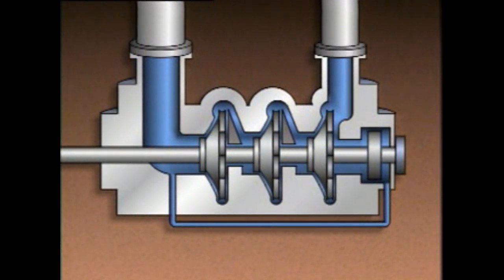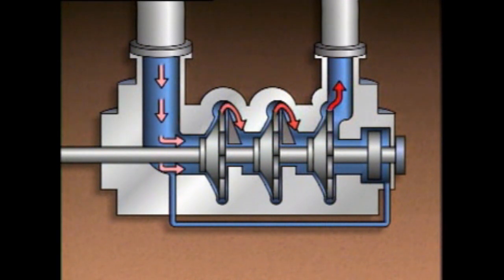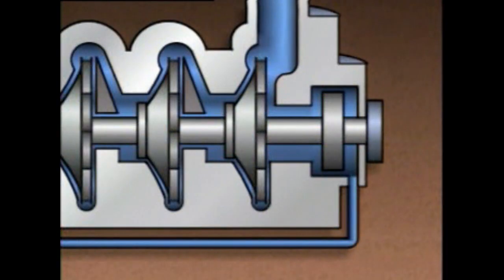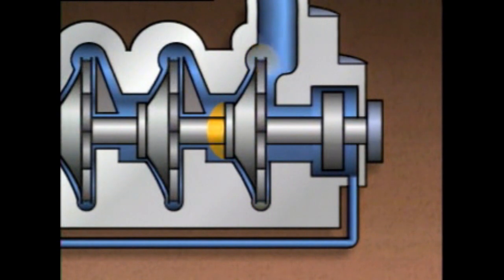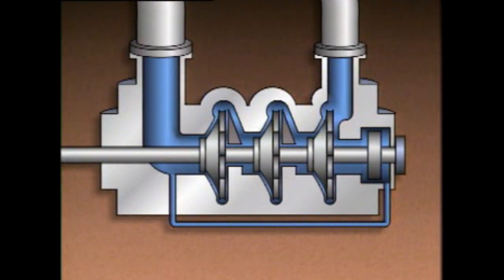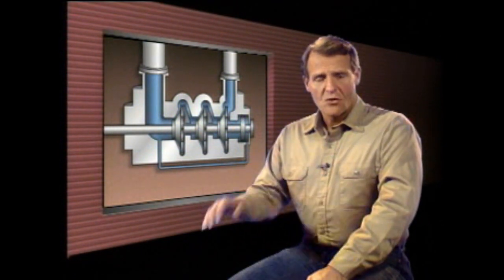Regardless of how impellers are arranged or how many stages a pump has, the liquid's pressure increases as it passes through each stage. This creates a thrust across the impellers known as axial thrust, caused by the pressure difference between the suction eye and the volute. Axial thrust tries to push the pump shaft toward the suction eyes. To allow the pump to operate properly, this thrust must be offset — either by a thrust bearing, a balance piston or balance drum, or by the arrangement of the impellers.